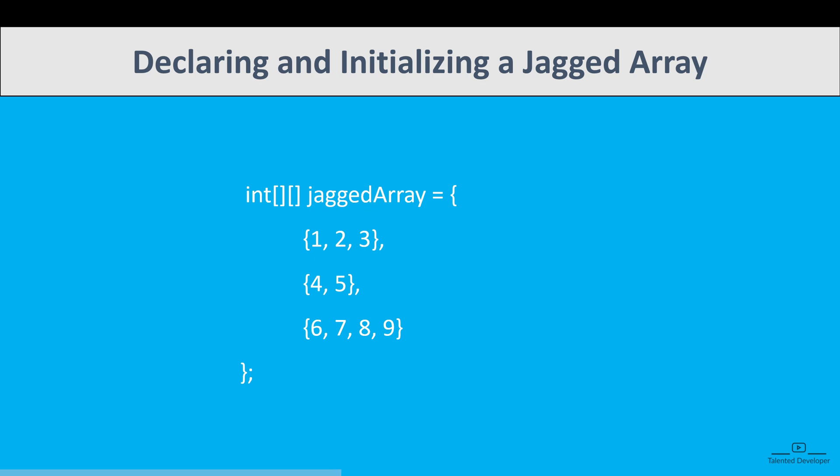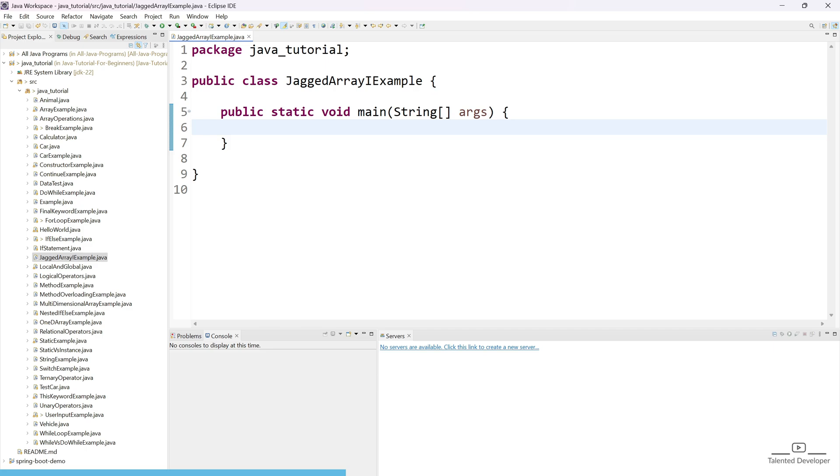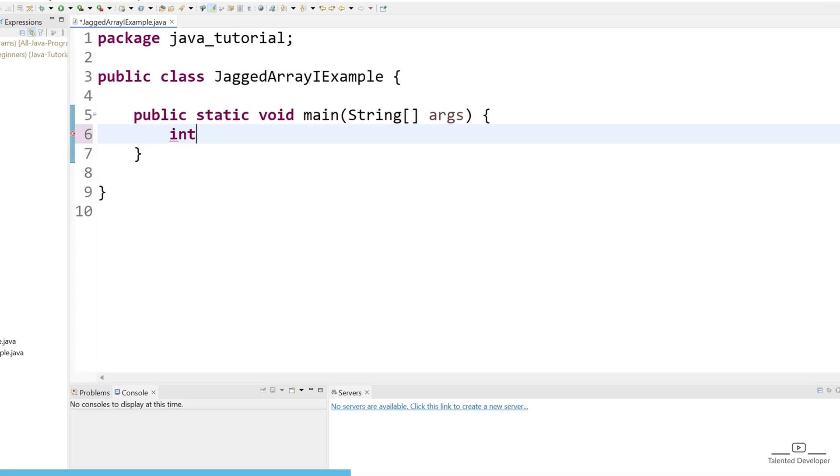Let's do the code. First of all, let's declare the jagged array. I can say int[][] jaggedArray—you can change the variable name, it depends on you. After that, just declare the values like {{1, 2, 3}, {4, 5}, {6, 7, 8, 9}}.